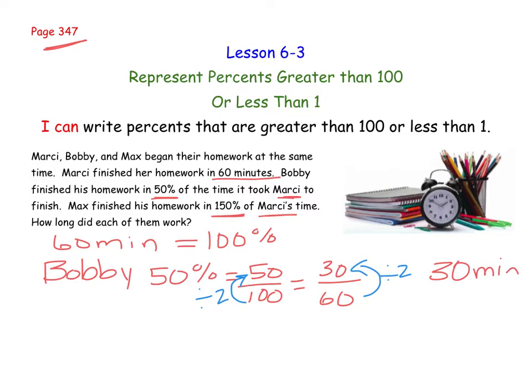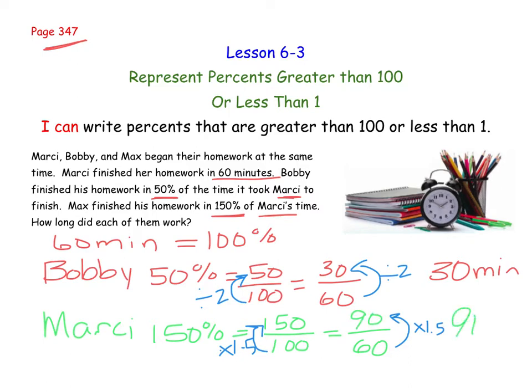Now let's check out Max. Max worked for 150% of the time. Well, 150% would be 150 out of 100 because percent's always out of 100. And remember, Marcy was 60 minutes. Just like we did with Bobby, let's think about what we do to 100 to get 150. So in this case, because our number's getting bigger, we're going to multiply by 1.5. And if I do that up to that fraction, I have to do that over here. I'm going to multiply by 1.5, and 60 times 1.5 is 90. So that must mean Max spent 90 minutes on homework.